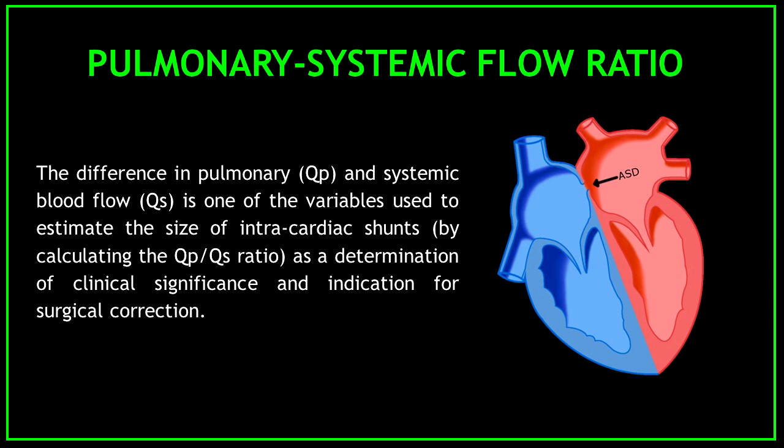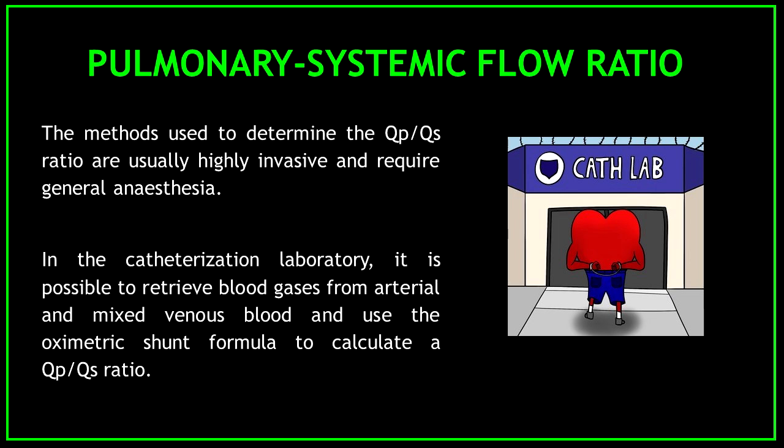So, what is the pulmonary systemic flow ratio? The difference in pulmonary QP and systemic blood flow QS is one of the variables used to estimate the size of intracardiac shunts as a determination of clinical significance and indication for surgical correction. The methods used to determine the QPQS ratio are usually highly invasive and require general anesthesia.